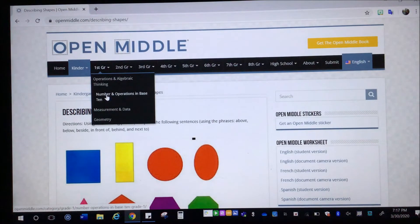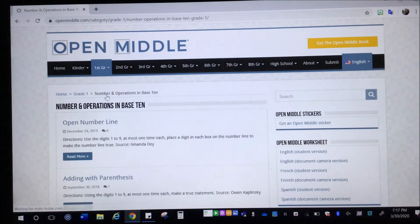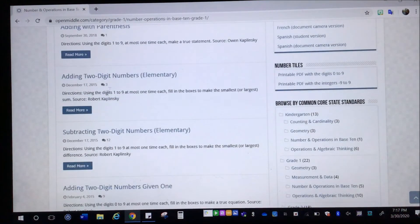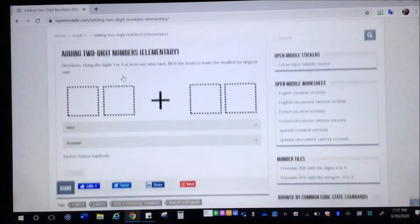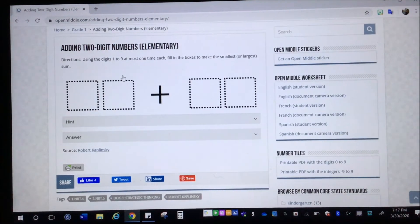Let's see, let's look at a first grade one. So if I go to number and operations in base 10, let's see, adding two digit numbers. Using the digits one to nine at most one time each, fill in the boxes to make the smallest or largest sum. So this is something you could easily just reproduce on a piece of paper. You don't have to have this printed out.